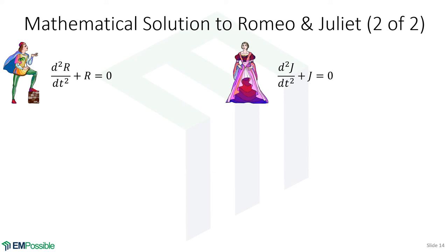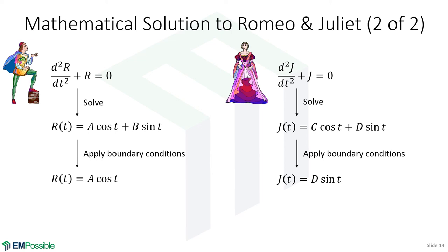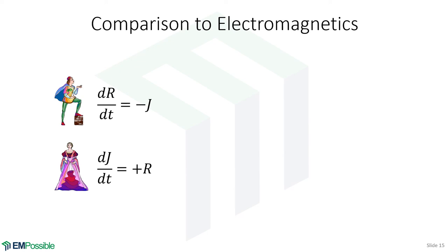Let's go ahead and solve these. Same equation, same general solution. We have to think about the initial conditions — suffice to say, they're both oscillating functions. One's a cosine, one's a sine. They're a little bit out of phase with each other, and that's why this oscillates.